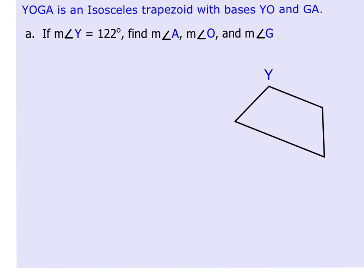You'll notice that the picture only has Y labeled. Well, you have to remember what bases are in an isosceles trapezoid. The bases are the parallel sides. Because these are the parallel sides, and because the Y is here, I'm going to put the O, G, and the A.